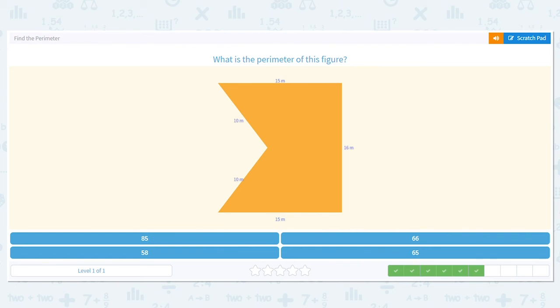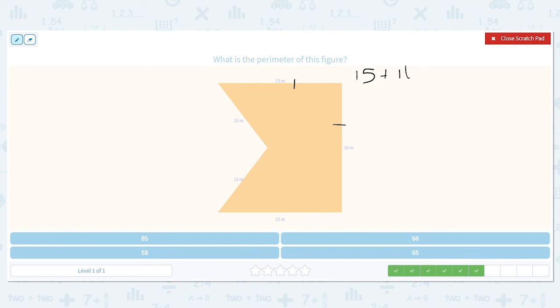How about this one? We have 15, 16, 15, 10, and 10. Let's do it. 10 plus 10 is 20. That's easy. But look, I also have 15 and 15. That equals 30. So now I can just bring down my 16.